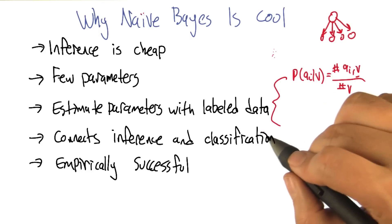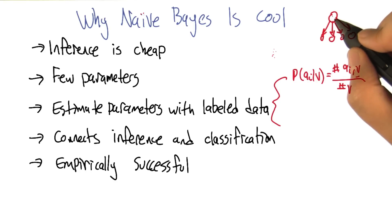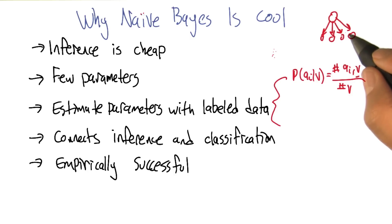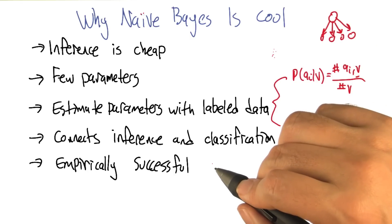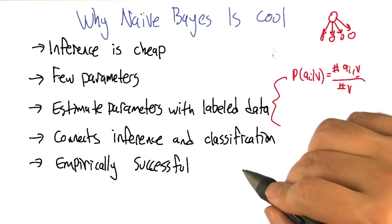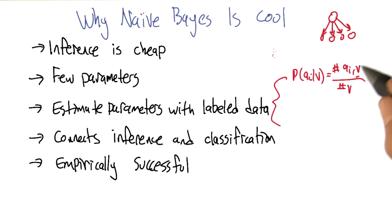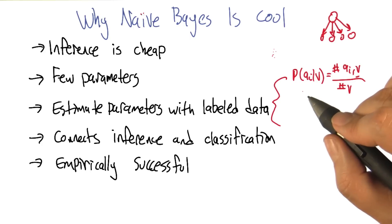It actually allows us to do all kinds of interesting things — instead of only generating what the labels are, we can actually generate what attributes are. We can do inference in any of these directions. And it turns out it's wildly successful empirically. My understanding is that Google uses a tremendous amount of naive Bayes classification in what they do. If you have enough data, you can estimate these values really well, and naive Bayes is just remarkably good.